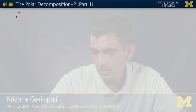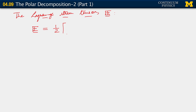Let me take a step back towards our strain tensor — the Lagrange strain tensor E — and say something about it. Remember that E is one-half of C minus the isotropic tensor. I want to write C as F transpose F right now. This is simply the right Cauchy-Green tensor C.